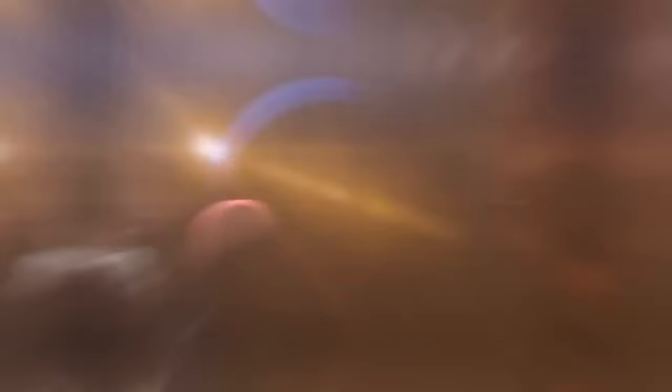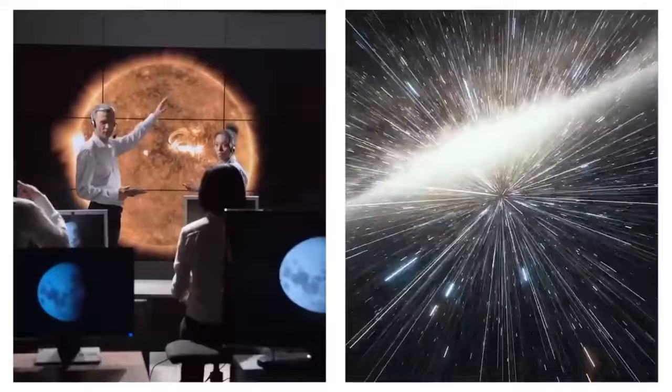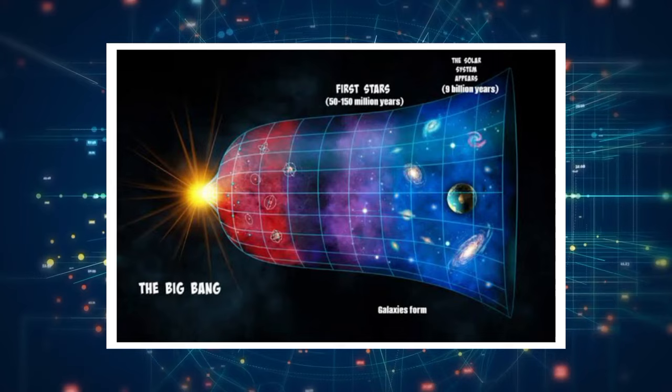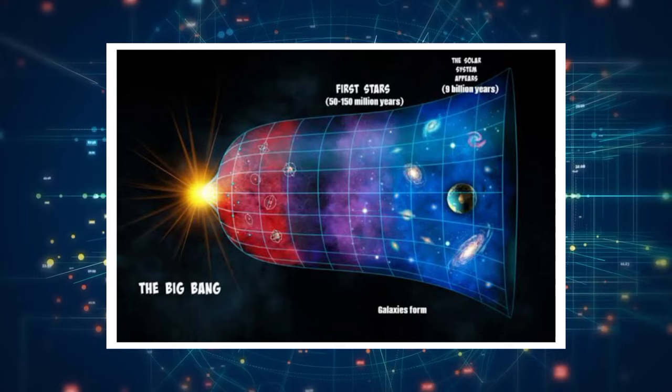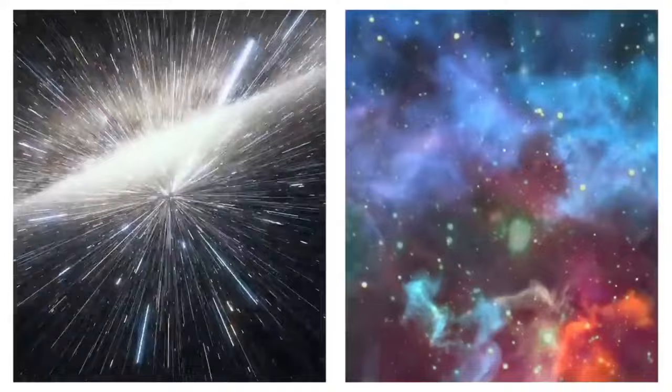The James Webb Space Telescope has uncovered some really exciting stuff. It found a bunch of baby stars forming in a place where we didn't expect them to, which is making scientists rethink how stars are born. Plus, it spotted some planets outside our solar system that might be just right for life to exist. Some of these planets even have atmospheres that hint at the possibility of life, which is super exciting. The aspect that amazed scientists was its ability to look back in time. It's captured light from galaxies that are so far away and so old that they formed not long after the Big Bang. These pictures give us a glimpse into how galaxies, including our own Milky Way, came to be.